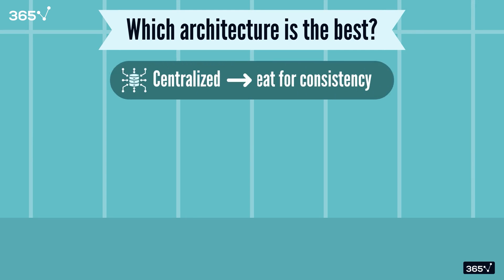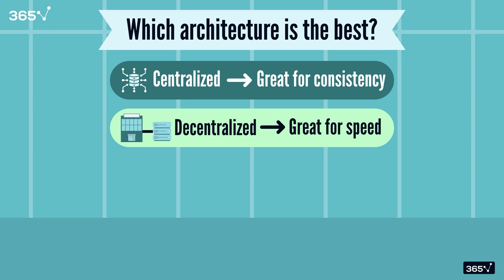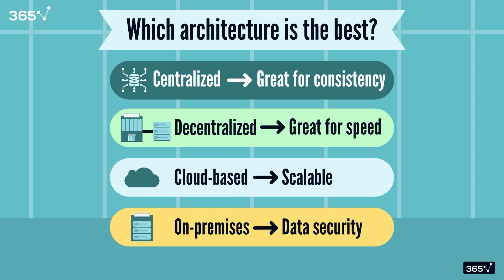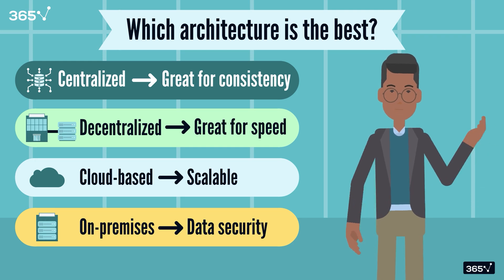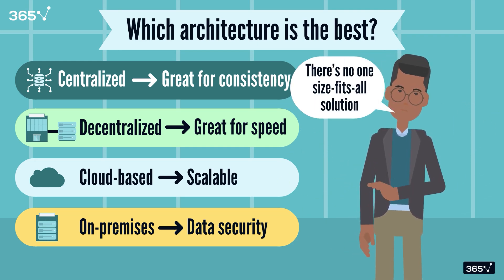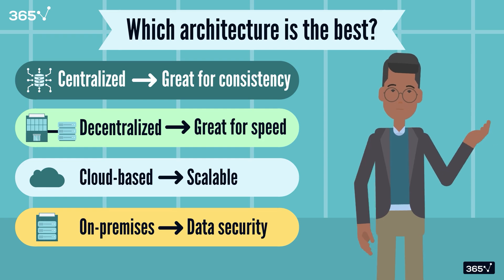So which architecture is the best? Well, it depends. Centralized systems are great for consistency, decentralized ones for speed, and hybrids for balance. Similarly, cloud-based systems shine when you need scalability, while on-premises work well for control. The key is aligning your choice with your organization's goals — there's no one-size-fits-all. It's all about what works for your needs.